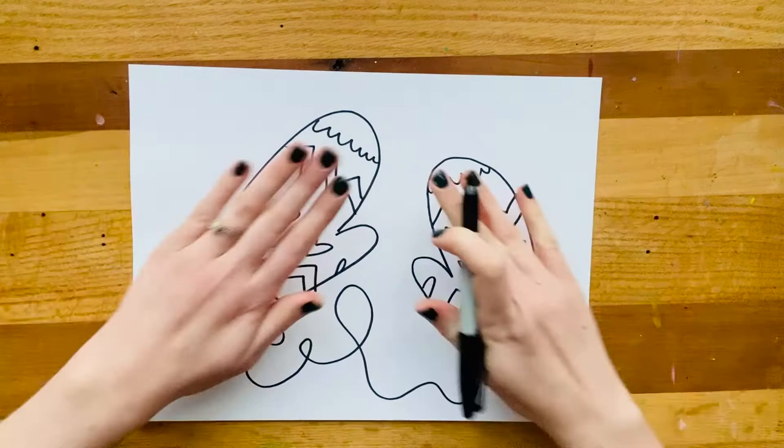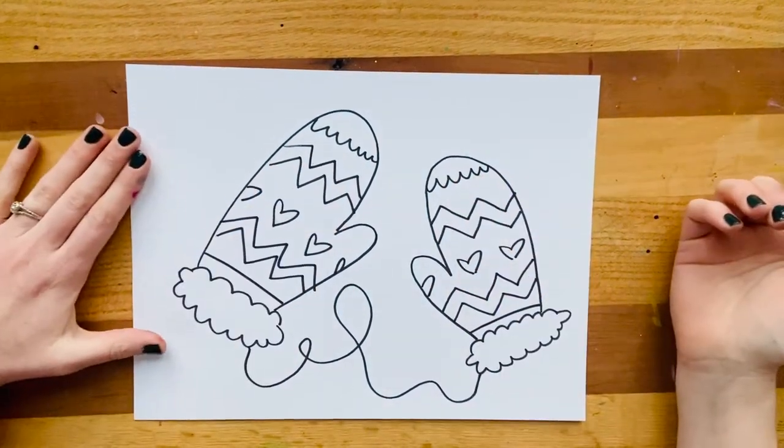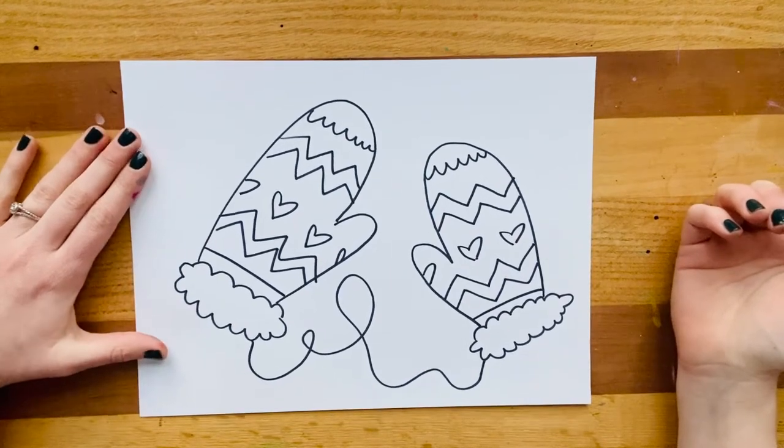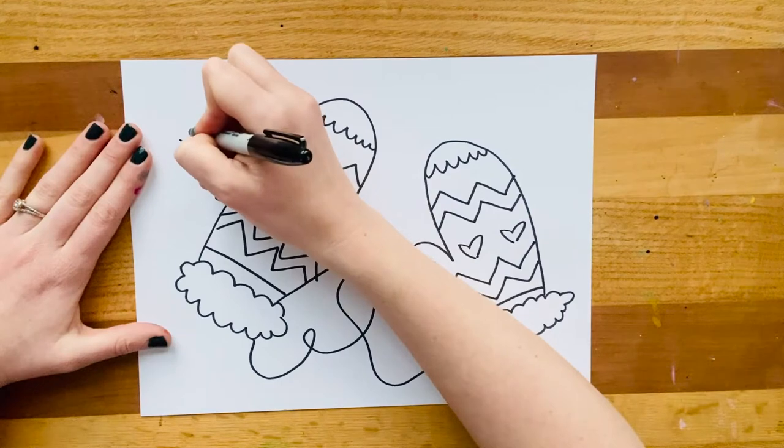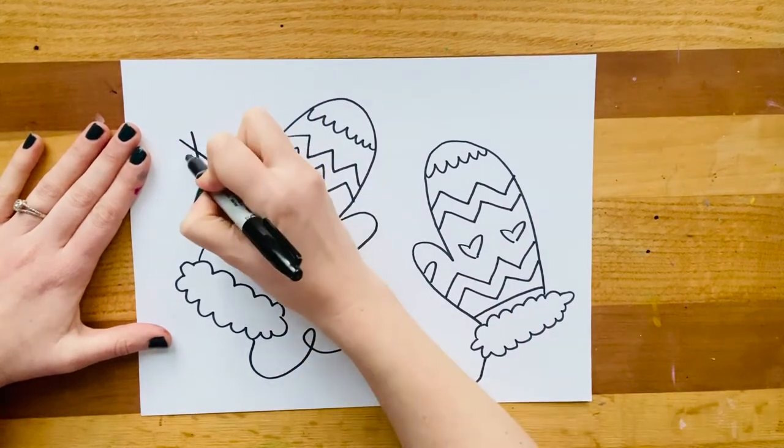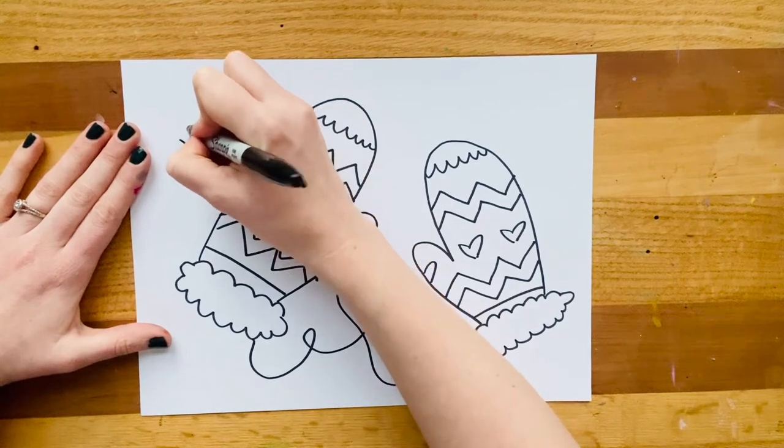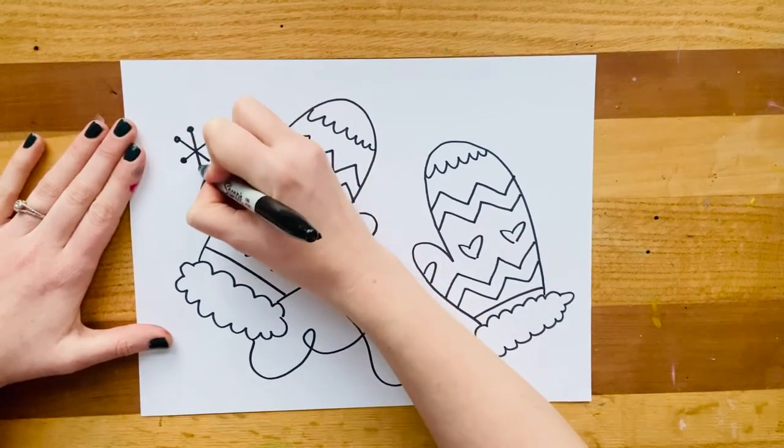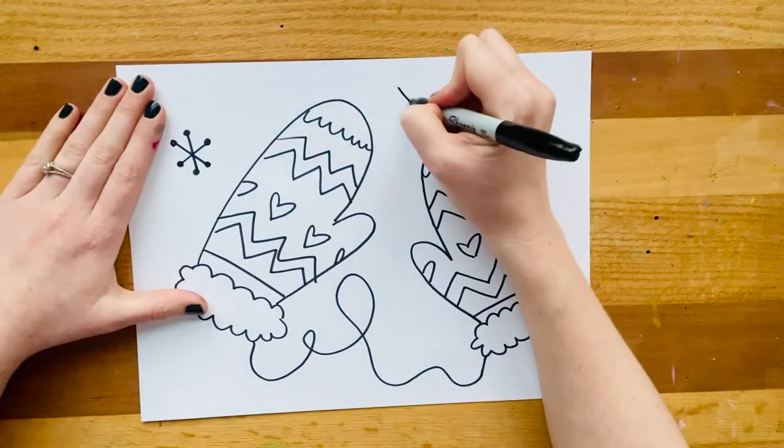Now since these mittens are sort of showing us that it's a cold winter day, you can also add some snowflakes to the background. And my favorite way to make quick snowflakes is by starting with a bit of an x shape, sort of like a skinny x, and then cross that skinny x, and then design the edge. So at the end of all of my x points, I've got a little dot.